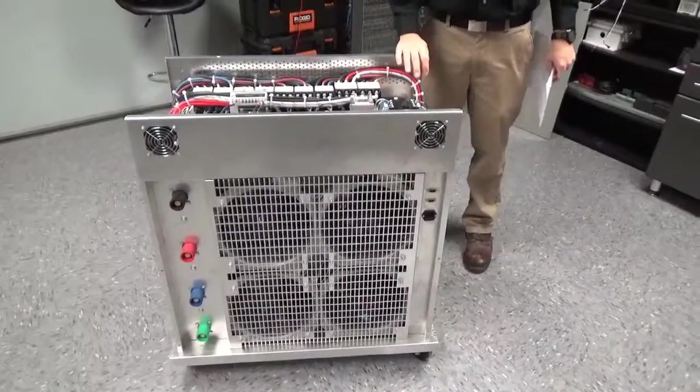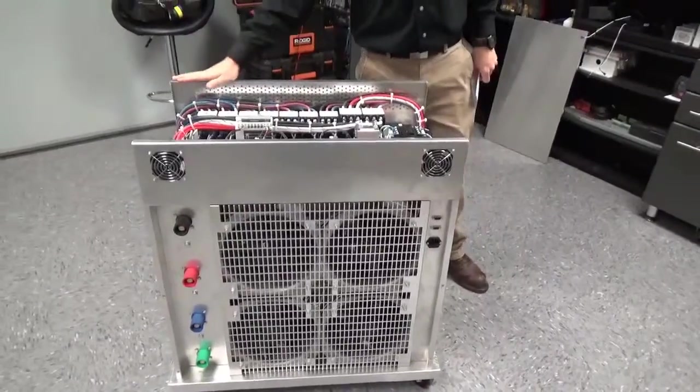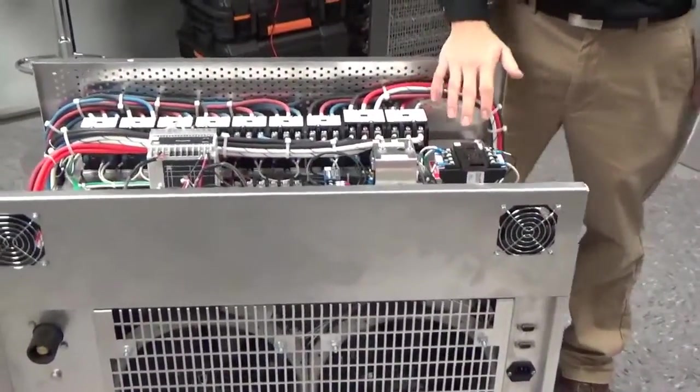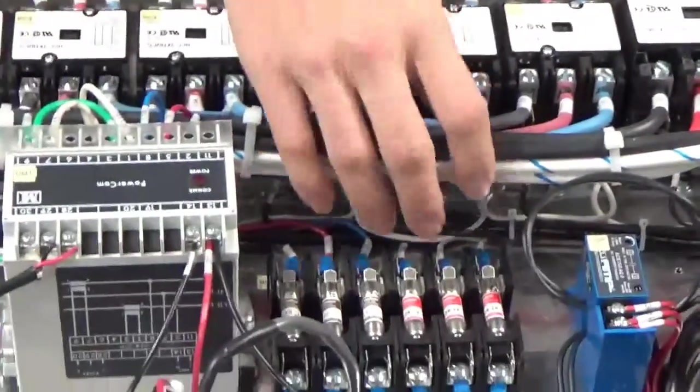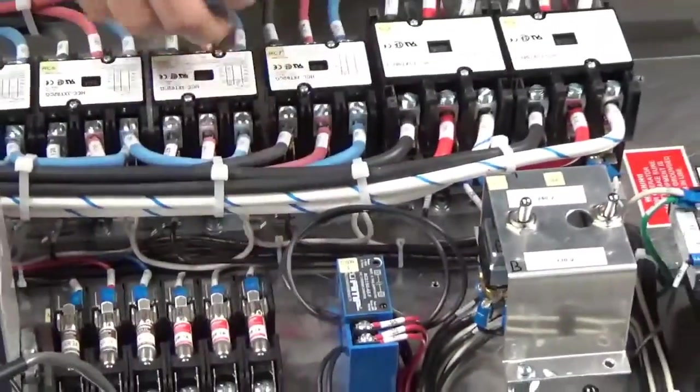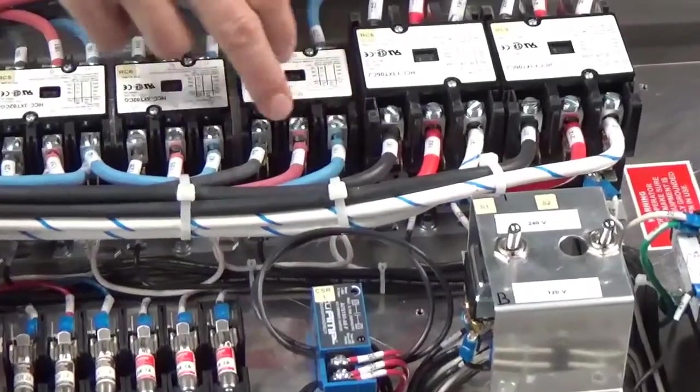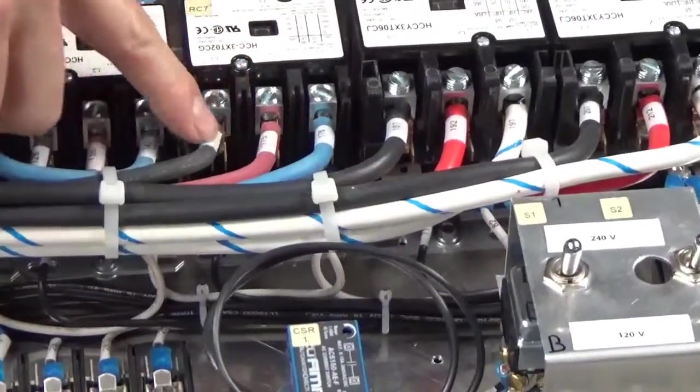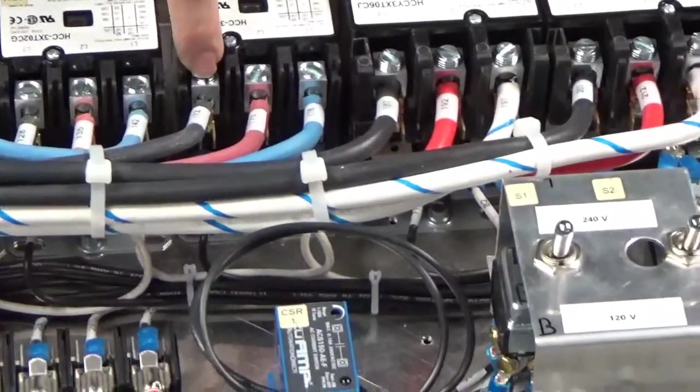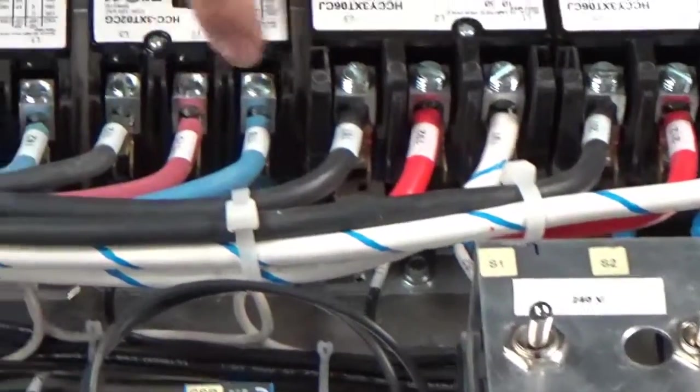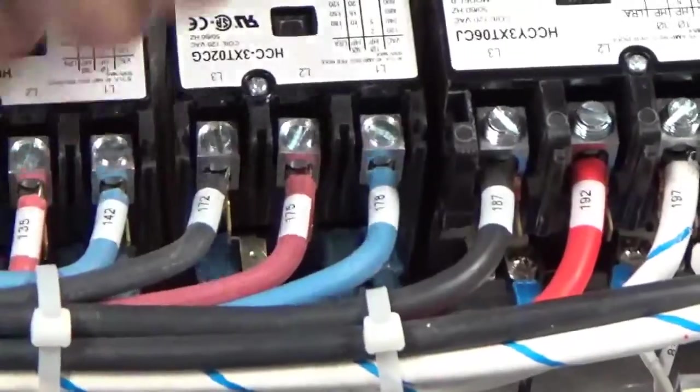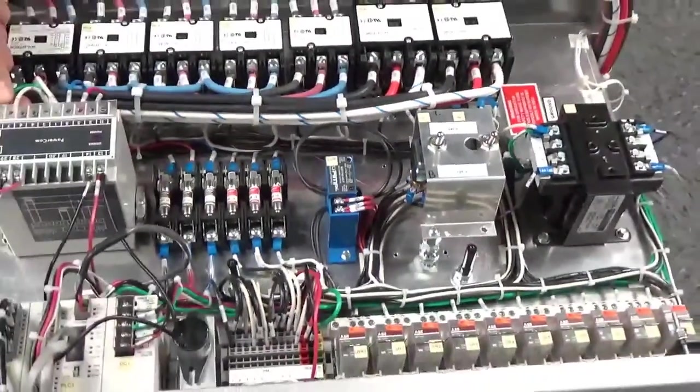So now that we have our covers removed from the load bank, we're ready to do just a visual inspection. You want to make sure that you're not seeing any loose wires, anything that might pull out here. A good indication if you have a loose wire is that the wire might be slightly browned on the tag, or that you might show a little bit more thread on your lug screws. So just give everything a good pull, make sure nothing's loose, nothing's pulling out on you.